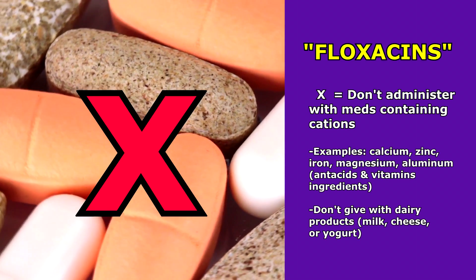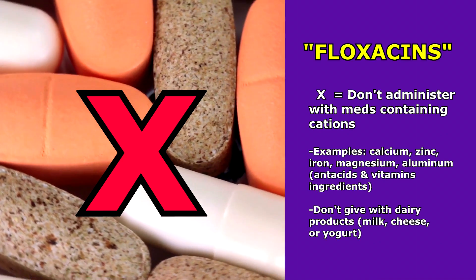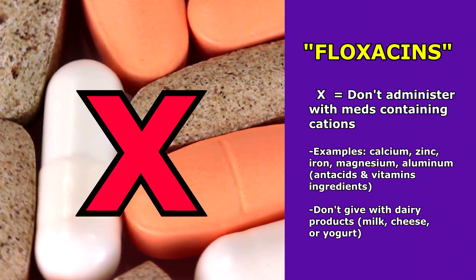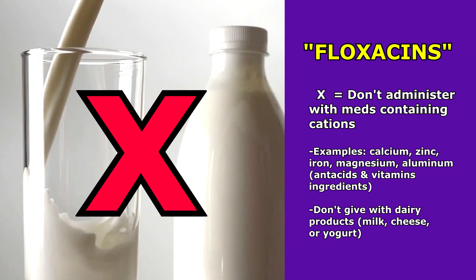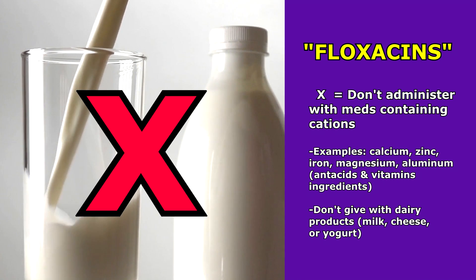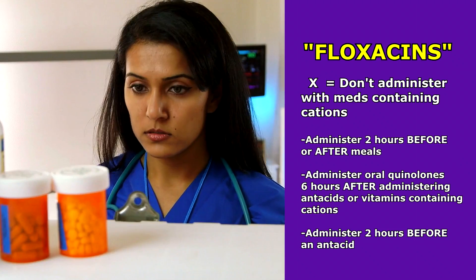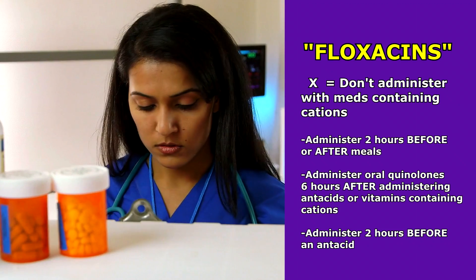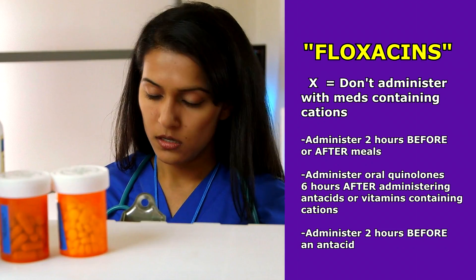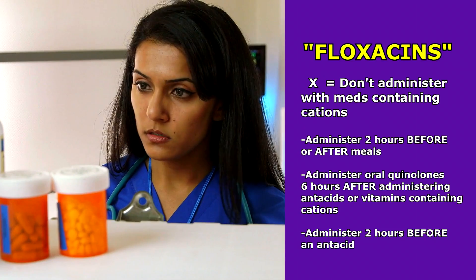X is for not administering quinolones with medications that contain cations like calcium, zinc, iron, magnesium, and aluminum — which are common ingredients in antacids and vitamins. You also don't want to give them with dairy products like milk, cheese, or yogurt, as all of these can decrease the absorption of oral quinolones. Administer oral quinolones two hours before or after meals, and six hours after antacids or vitamins containing those ingredients, or two hours before an antacid.